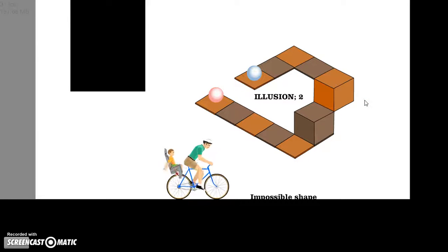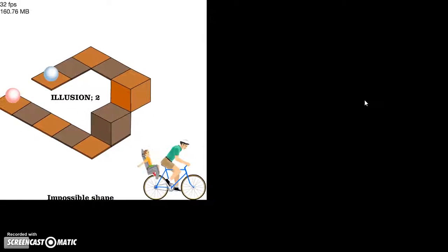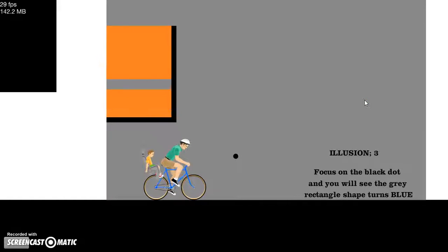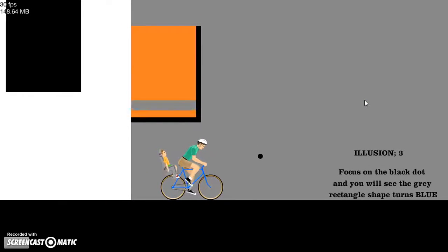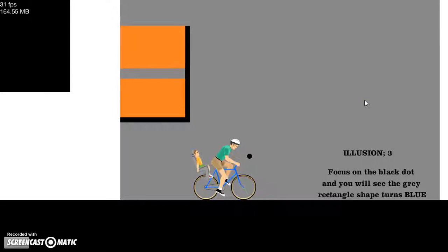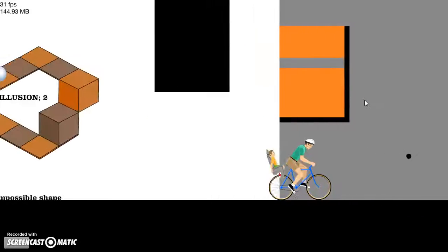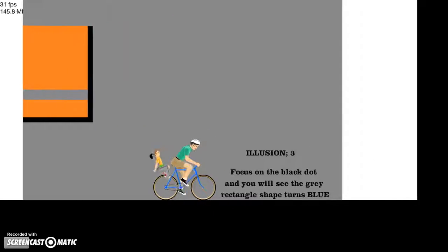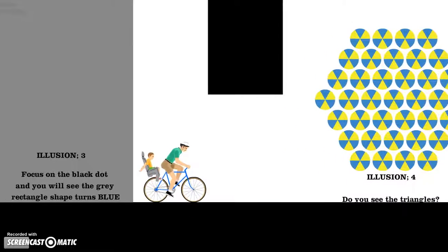Impossible shape. Yeah, I've seen these. It's impossible, it's just a drawing. Illusion, focus on the black dot and you'll see a grey rectangle turn blue. Snap! Jesus Christ, that actually turned blue. How do they do that? Why does it turn blue? You guys try it. Stare at the black dot. That turns blue. Jesus Christ. That's black magic for you.